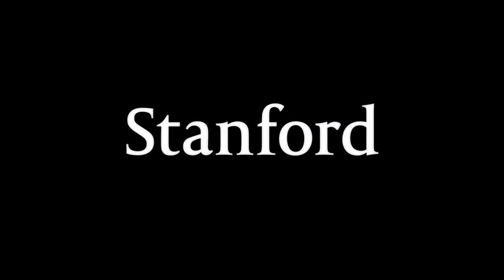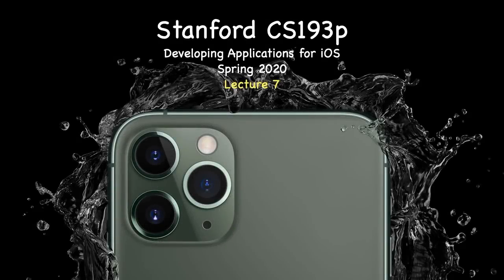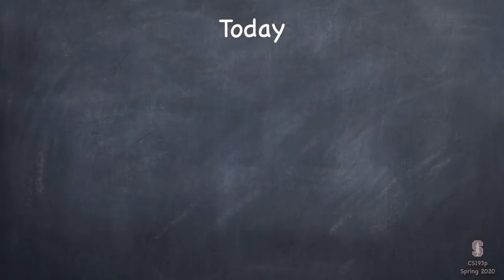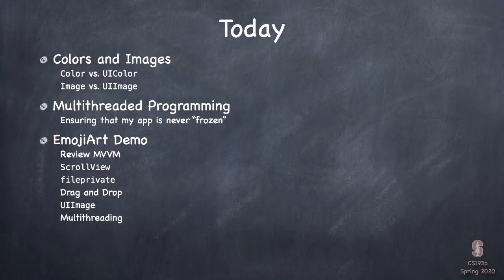Stanford University. Lecture 7, Stanford CS193P Spring of 2020. Today we're briefly going to talk about colors and images, just a couple of minutes. Then we're going to dive into our main topic today, which is multi-threaded programming.